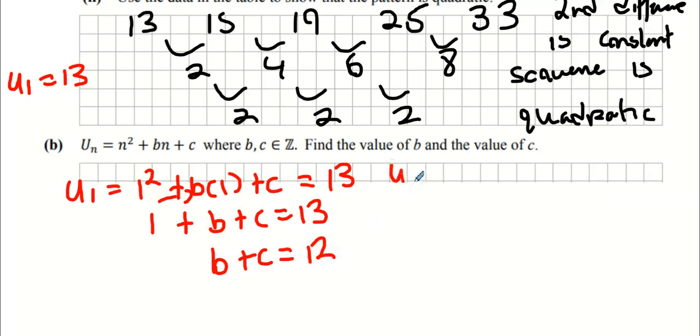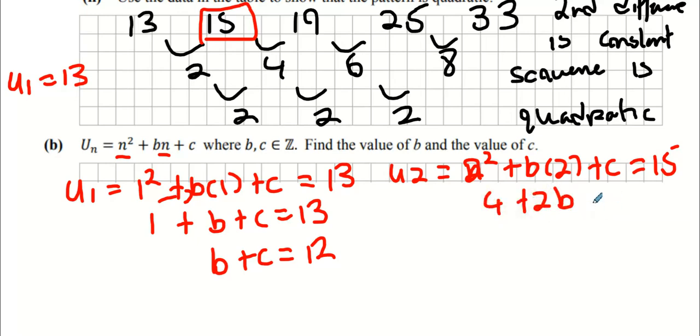For the U2 equation, I'm replacing N value with 2. So I'm going to get N squared plus B times 2 plus C. The answer for U2 is 15. That's 2 squared, so it's going to be 4 plus 2B plus C equals 15. I'm going to bring the 4 to the other side, so 2B plus C equals 11.